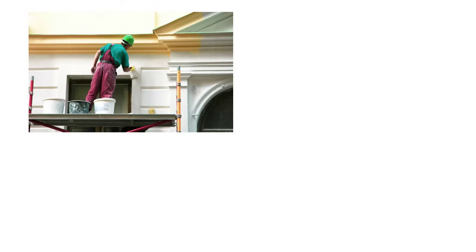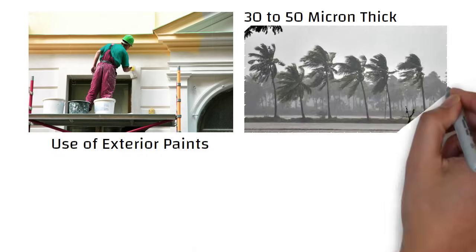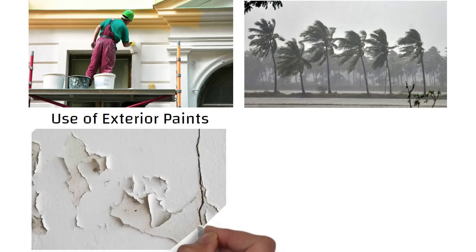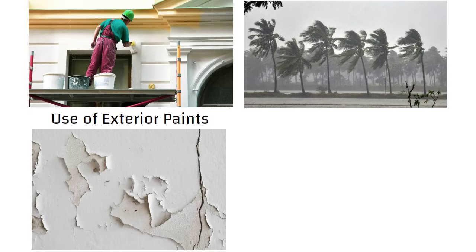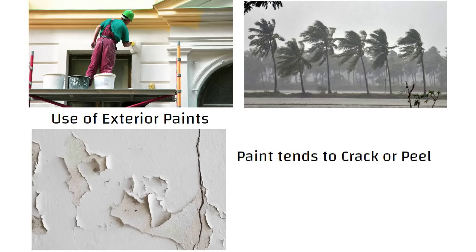The usual method of waterproofing exterior walls is the use of exterior paints. However, paints are 30 to 50 micron thick and are not thick enough to resist the wind lashing rains that can damage the paint film. Thus, over a period of time, the paint tends to crack or peel, leading to problems like damp patches and seepage, especially in the monsoon.